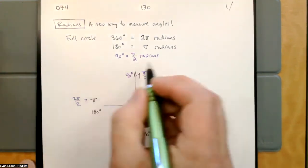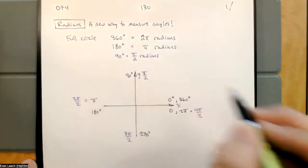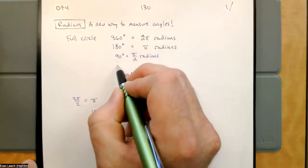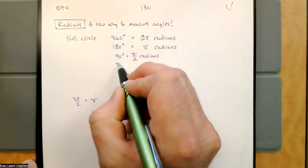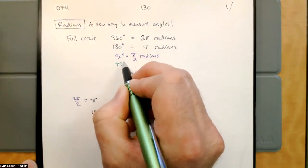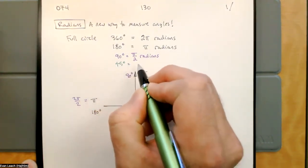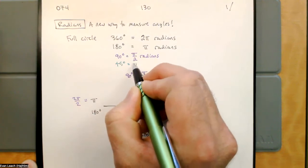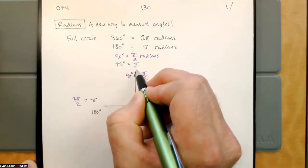If we cut it in half again: 45 degrees is pi over 4 radians.